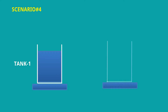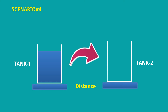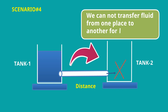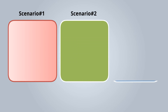Scenario 4: Tank 1 is filled with fluid, and tank 2 is located at a distant area from tank 1. A simple piping arrangement is not feasible here, because there will be losses in the pipe and possibly elevation differences. We cannot transfer fluid from tank 1 to tank 2 over a long distance without special equipment.